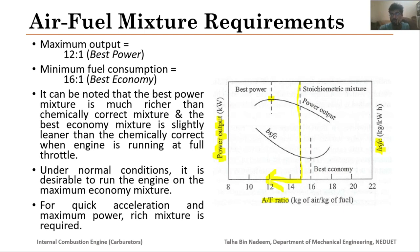Best power output is the requirement in the case of acceleration or idling. The second graph of air-fuel ratio versus brake specific fuel consumption shows that when operating under normal or cruising conditions, you do not provide a stoichiometric mixture but rather the best economy mixture, which is slightly leaner than stoichiometric. So under normal conditions it is desirable to have maximum economy mixture, but when you require quick acceleration or maximum power you need a rich mixture. When you require more economy you send a lean mixture.